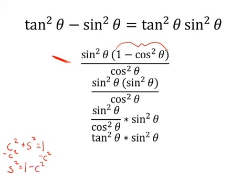These are two other identities based off of the Pythagorean identities, just solved for different things. So I've used this identity and replaced 1 - cos²θ with sin²θ. Now, since it's being multiplied, I can attach it to the first part. sin²θ / cos²θ gives me tan²θ. So now I have tan²θ times whatever's left over, which is sin²θ. That's what we're doing — reducing our functions to get our answer.